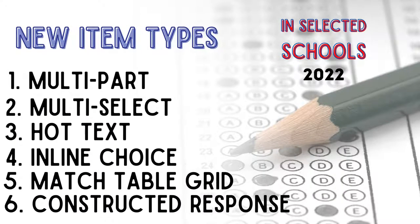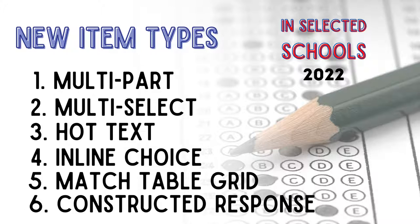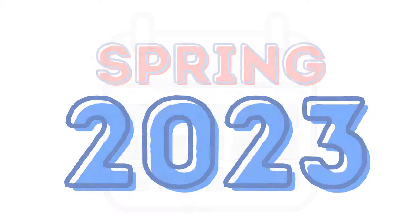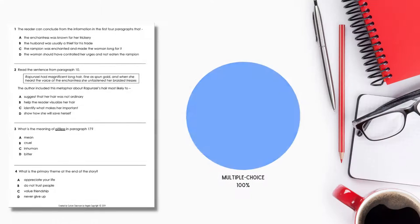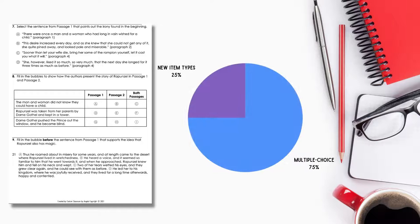There are six new item types that will be field tested in selected schools in 2022, but they will count on the spring 2023 test. In the past, the STAR test was 100% multiple choice. Now only 75% of questions can be multiple choice, and at least 25% will be these new item types.